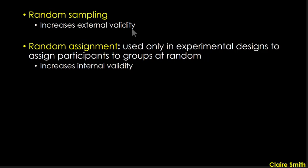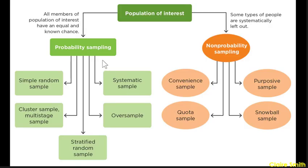It's important not to confuse random sampling with random assignment. Random assignment is used in experimental design, where participants are assigned to groups at random — this increases internal validity. Random sampling is about how you recruit participants from the population and increases external validity. Make sure you keep these two terms distinct.